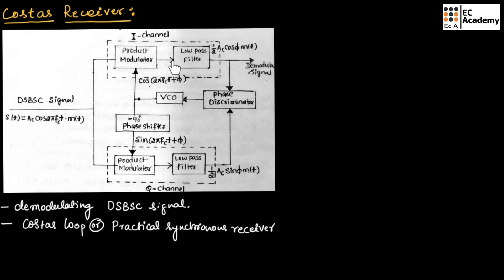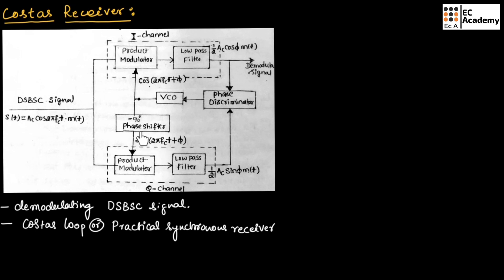The Costas receiver consists of two coherent detectors as shown in this figure. These two coherent detectors share the same DSBSC input signal, but receive individual carrier signals produced by a voltage controlled oscillator with a 90-degree phase shift between them. The upper I channel has a local oscillator signal of cos(2π·fc·t + φ), and the lower Q channel has sin(2π·fc·t + φ).